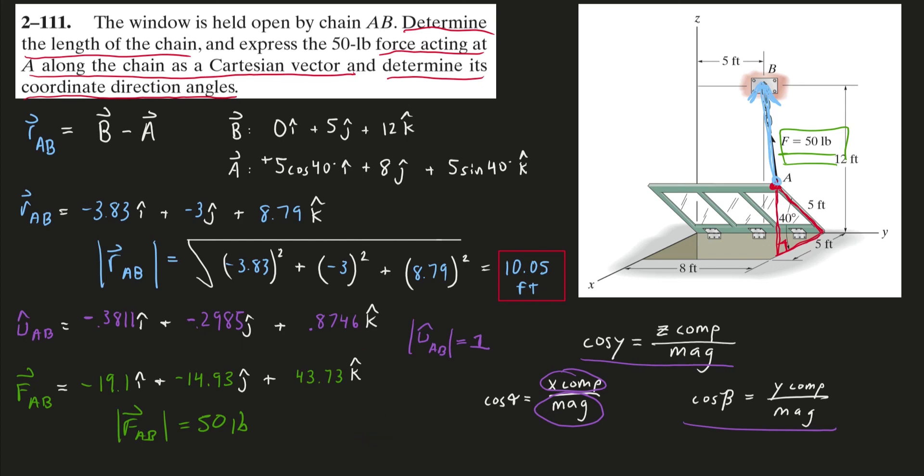So we just have to substitute our force values in here. And just a quick note, because our position vector, our unit vector, and our force vector are all in the same directions, they're all literally on that same line pointed the same way, we could do this process on any one of them and get the same alpha, beta, and gamma.